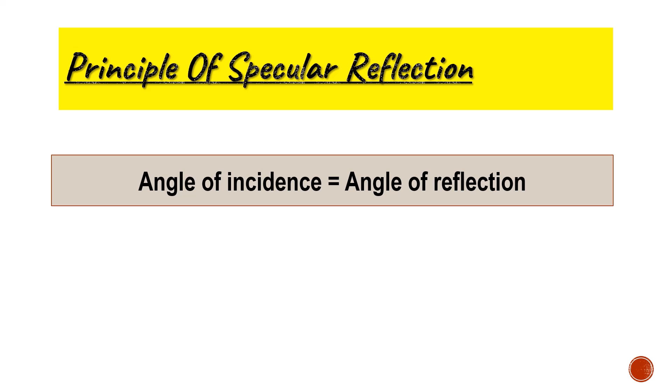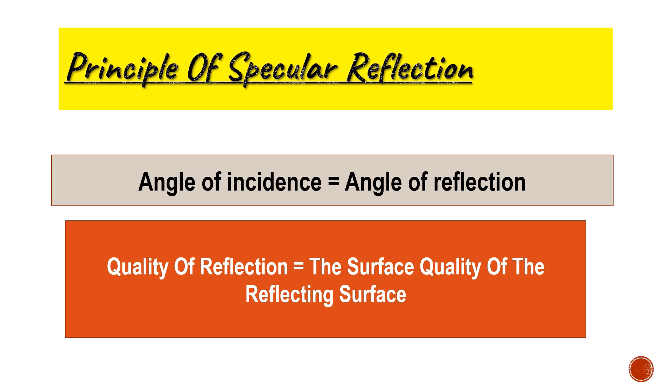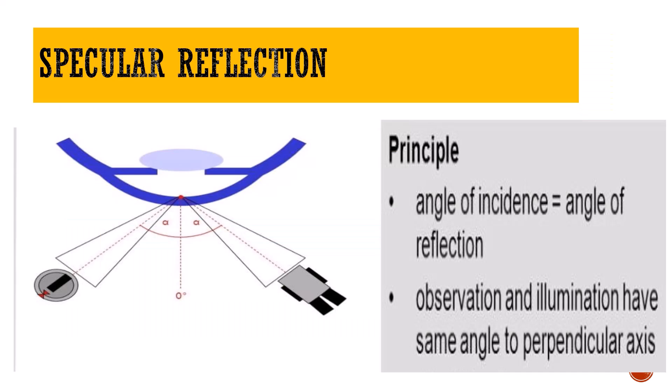What exactly is the principle of specular reflection when we use it to study the cornea in the slit lamp? The main principle is that the angle of incidence should be equal to the angle of reflection. Based on that, we study the quality of the reflection we get from the surface. From the quality of that reflection we can derive the quality of the reflecting surface — whether it is the anterior cornea, the endothelium, or the lens — allowing us to assess their surface quality.